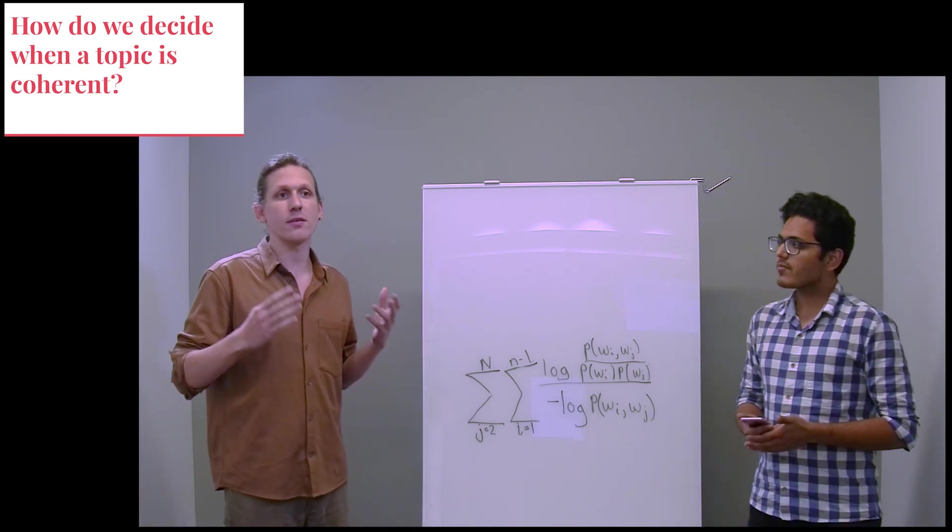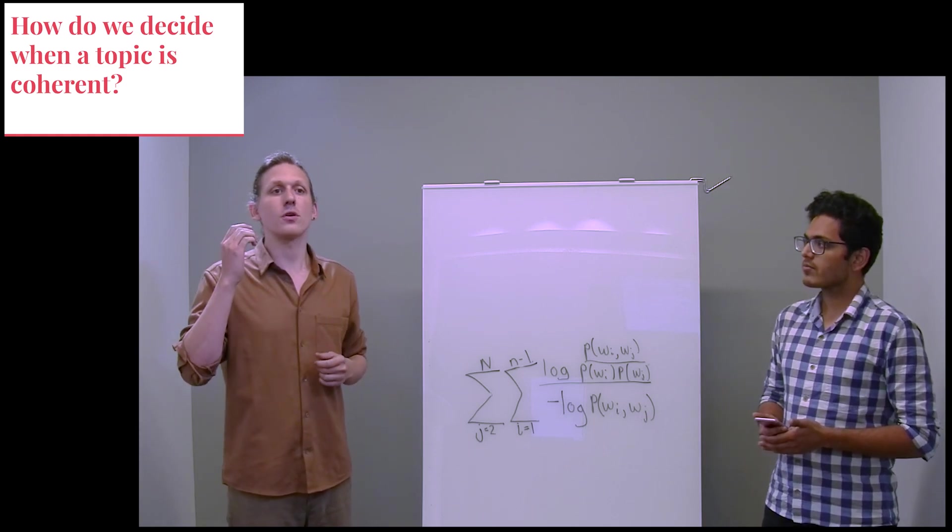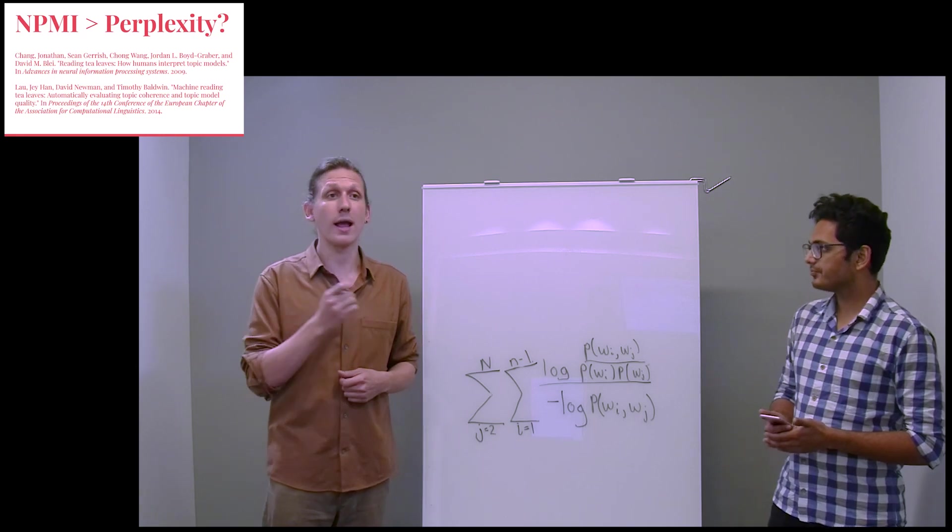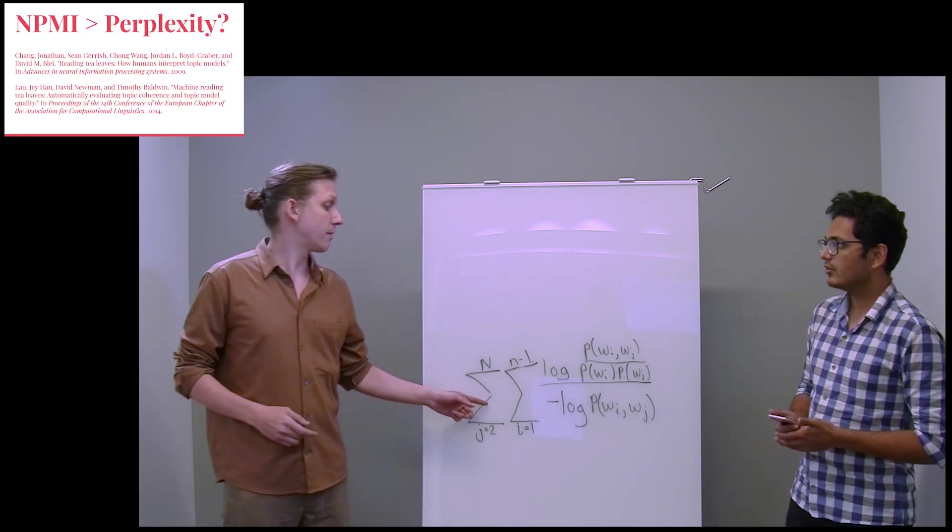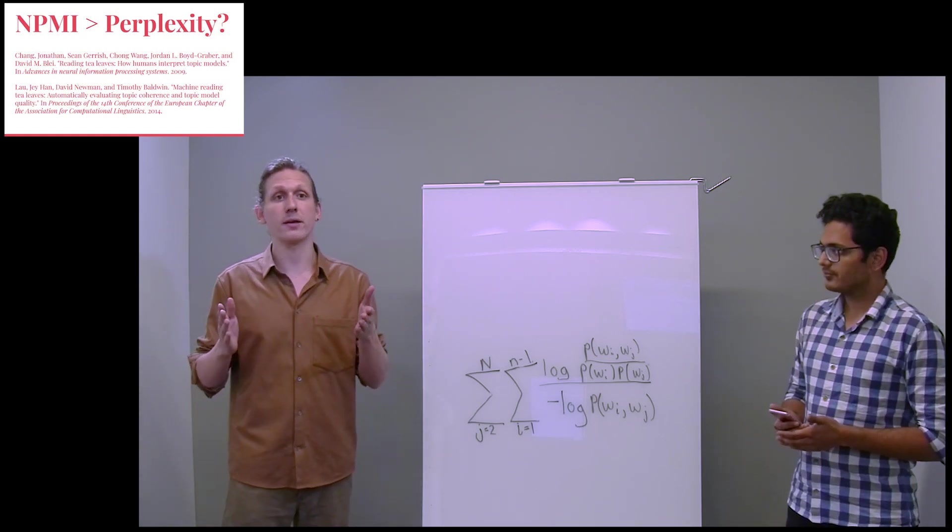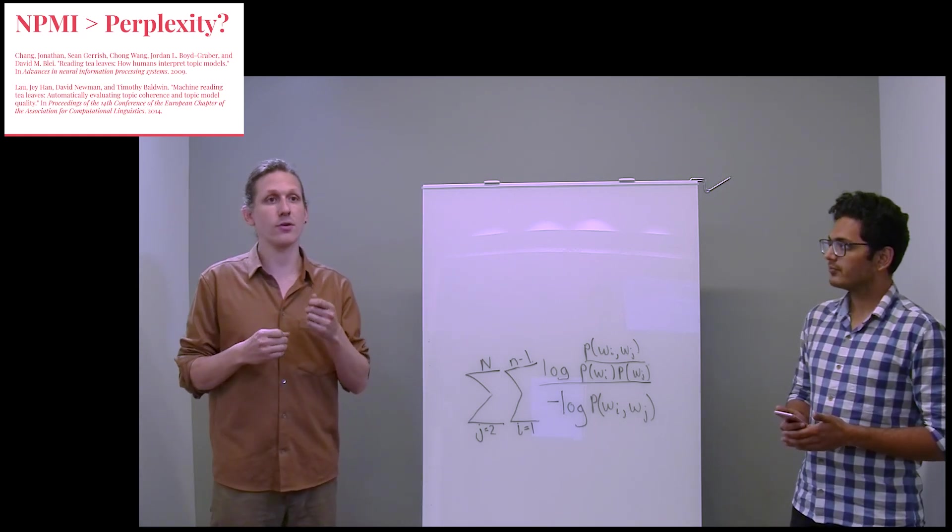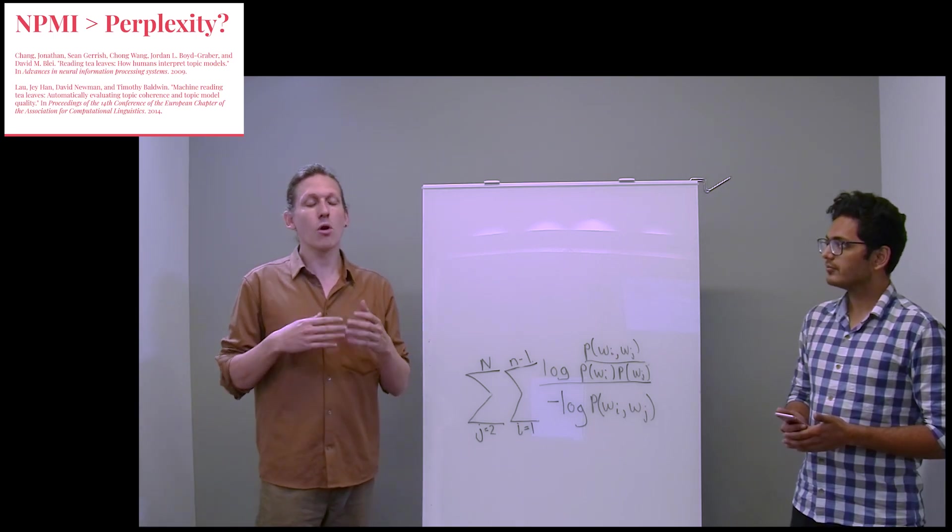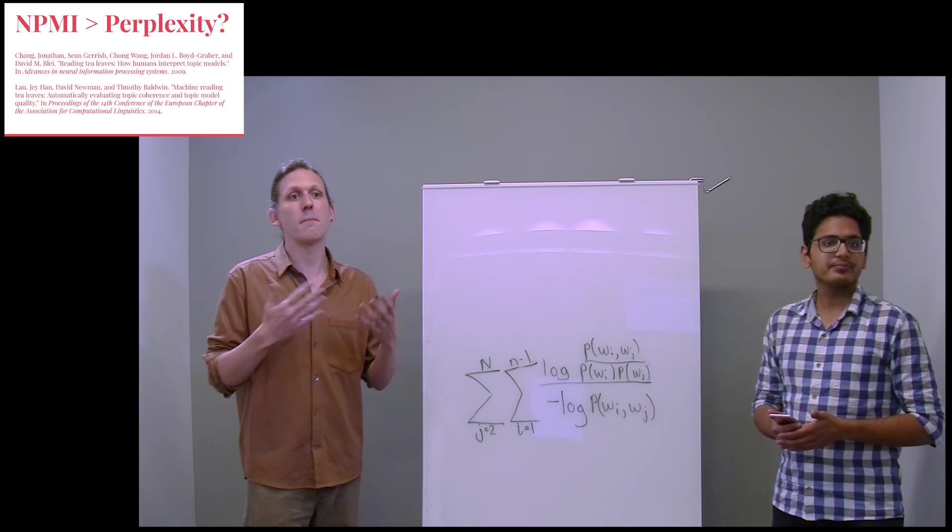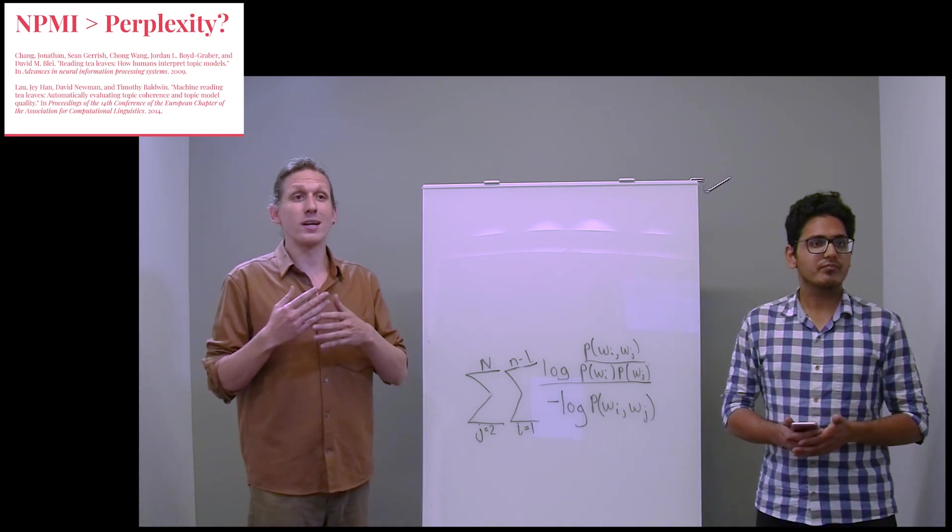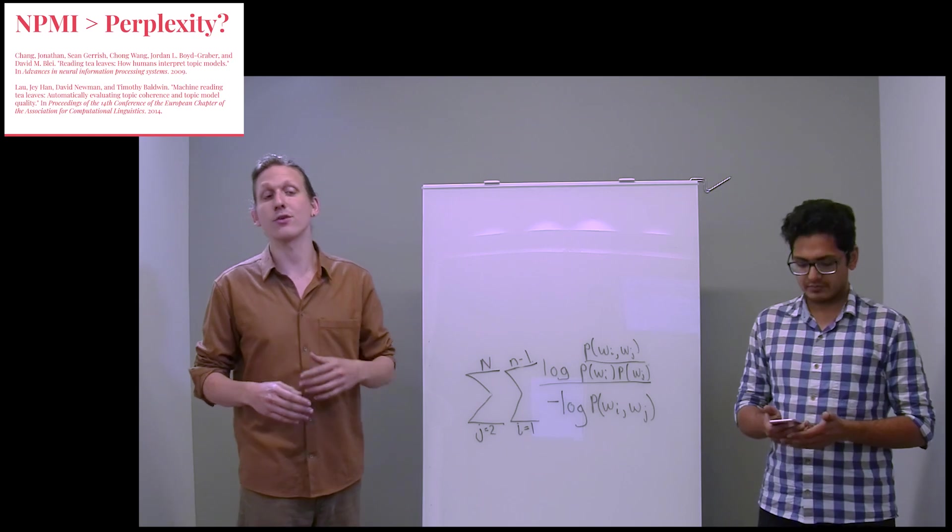There are many different kinds of metrics, but the most common is normalized pointwise mutual information, or NPMI. Very simply, NPMI takes all pairs of words in a given topic and sees how often they appear together in some outside reference text like Wikipedia. The more often words appear together, the better. Each topic has an NPMI value, and you can score an entire model by averaging over the values for each topic.